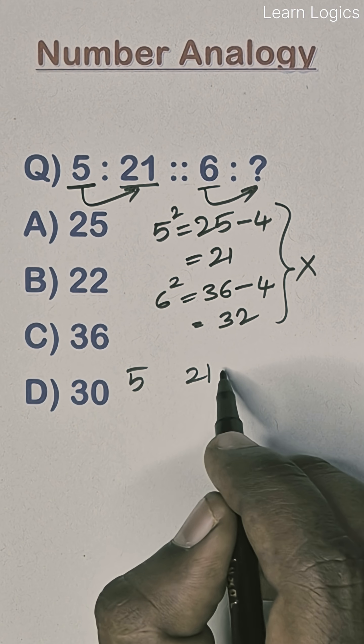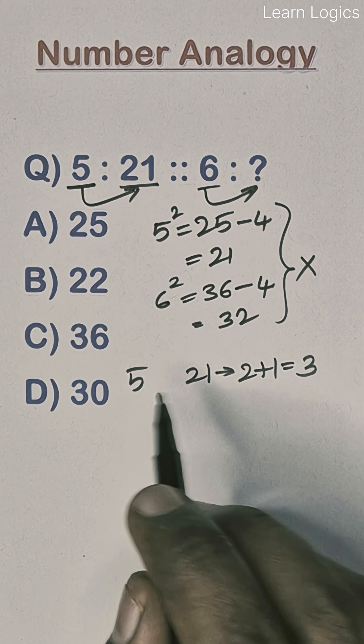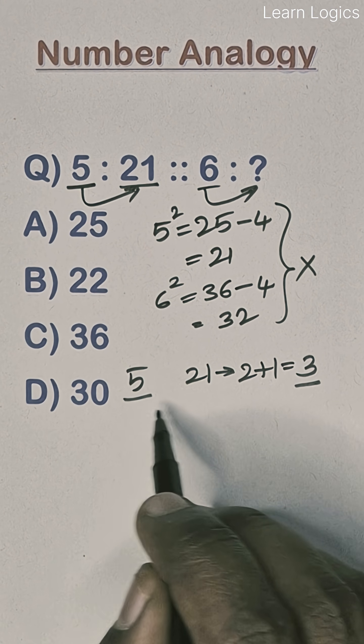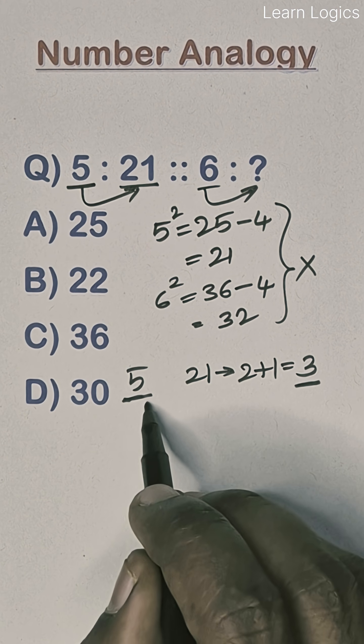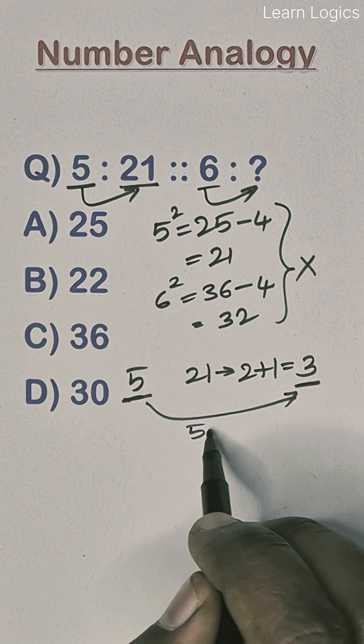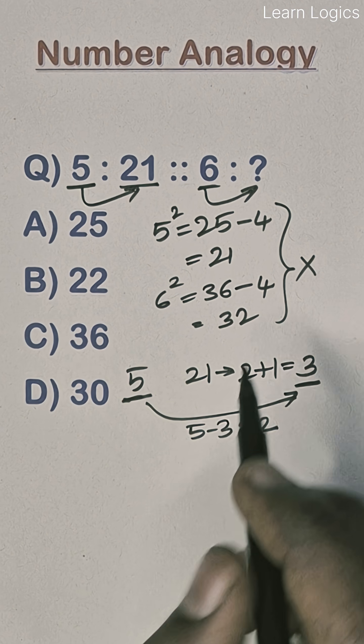So take 5. Take 5 and 21, write like 2 plus 1, that is 3. And 5 and 3, subtract them. 5 minus 3 is 2. So this is the relation.